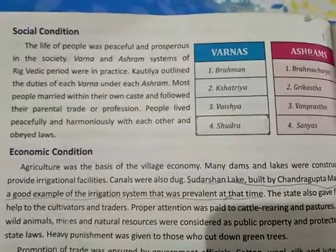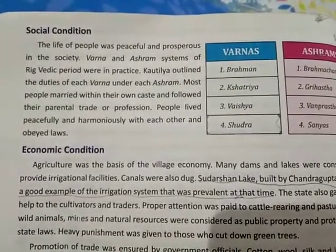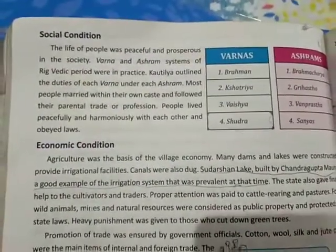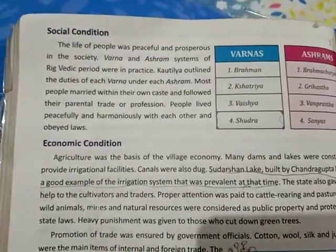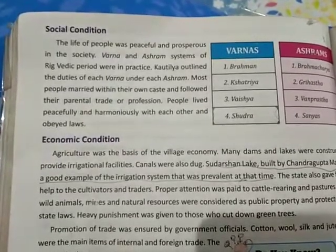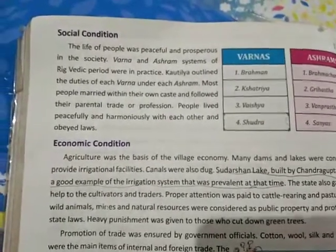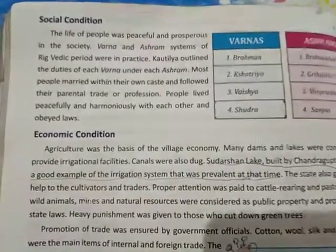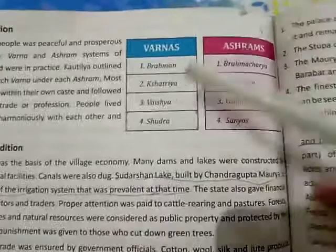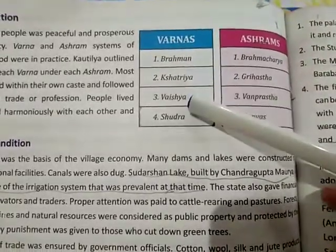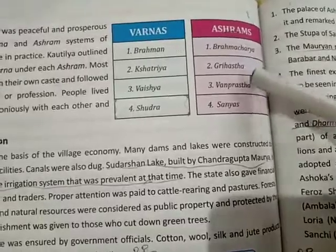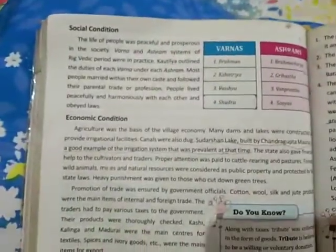The life of people was peaceful and prosperous in society. People at that time were living a life that was peaceful, tranquil, calm, and prosperous — they were successful in their areas. The Varna and Ashram systems of the Rigvedic period were in practice. The Varnas are Brahmin, Kshatriya, Vaishya, and Shudra, and the Ashrams are Brahmacharya, Grihastha, Vanprastha, and Sanyas, as we studied in the chapter on Vedic civilization.